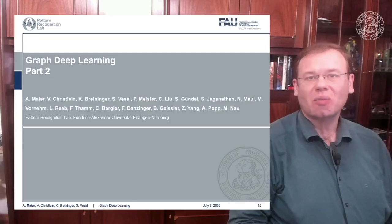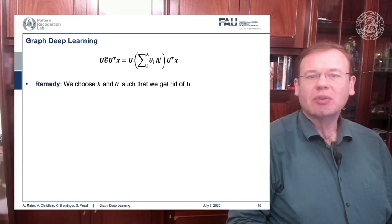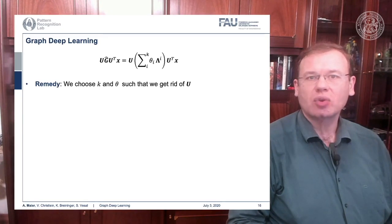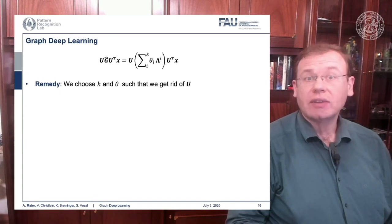You remember we had this polynomial that we used to define a convolution in spectral domain. By computing the eigenvectors of the Laplacian matrix, we were able to find an appropriate Fourier transform that would give us a spectral representation of the graph configuration. Then we could do our convolution in spectral domain and transform back.